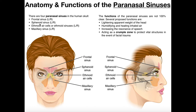The sphenoid sinus is of course going to be in the sphenoid bone, and the sphenoid sinus is the most posterior of all four paranasal sinuses. Here in yellow, this is the sphenoid sinus. Remember that with each of these, they come in a set of left and right.